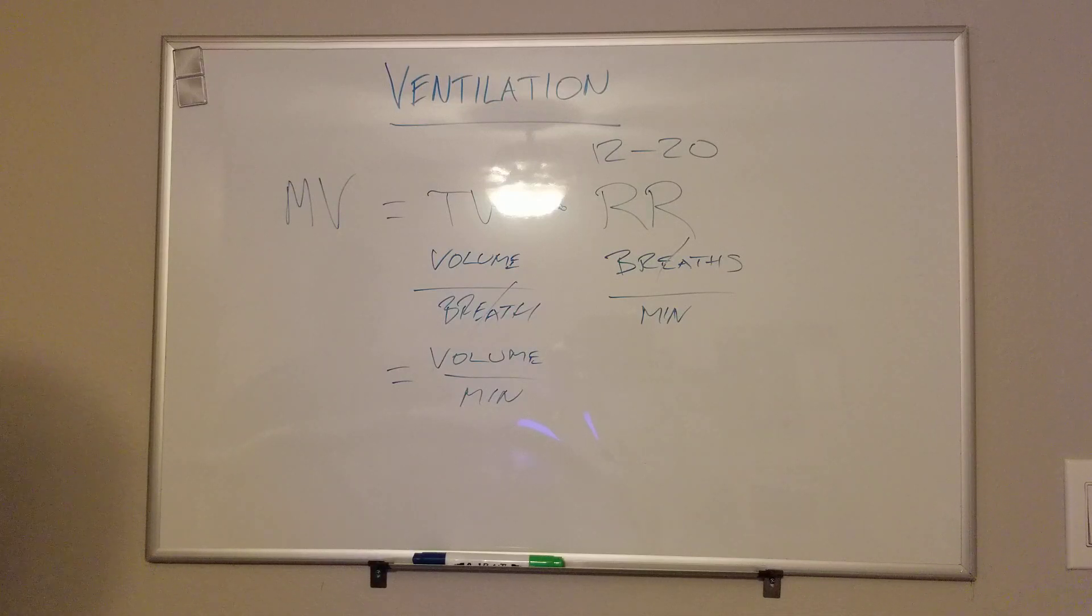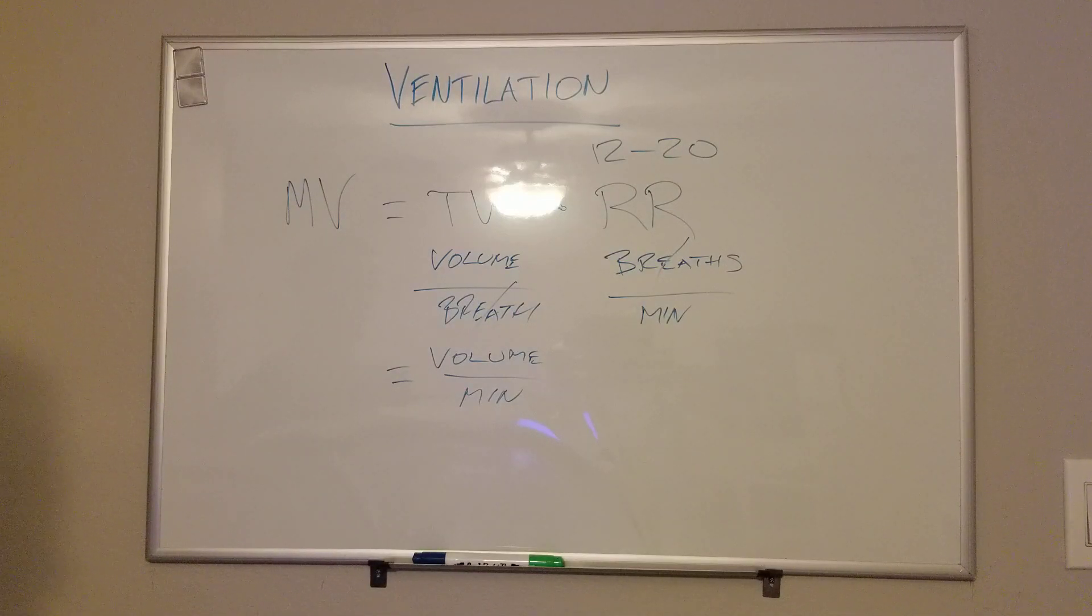And then tidal volumes. This is something that usually the vent will report to you what their tidal volumes are, usually in milliliters. So like 500 milliliters is what their tidal volumes are, 400 to 600, etc.